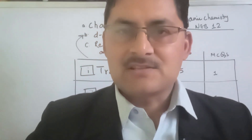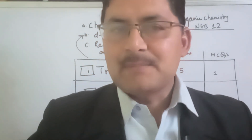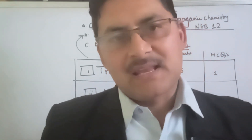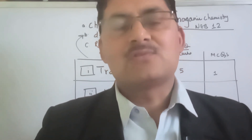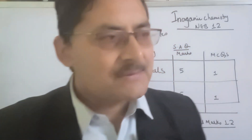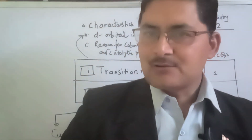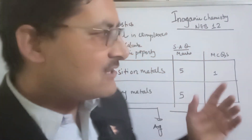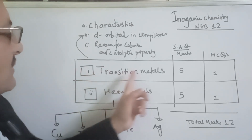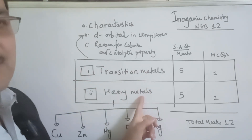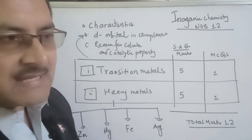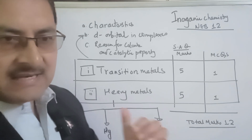So, in Class 12, we get into introductory inorganic chemistry. In Class 12 inorganic chemistry, there are two main topics: transition metals and heavy metals. There are also different aspects of transition metals.